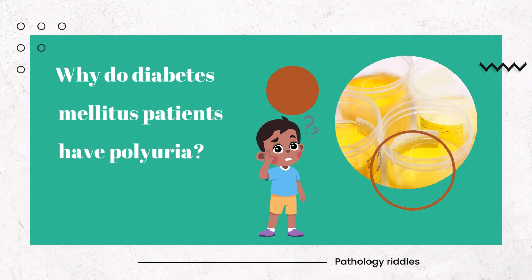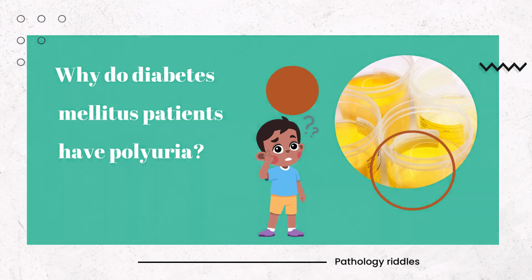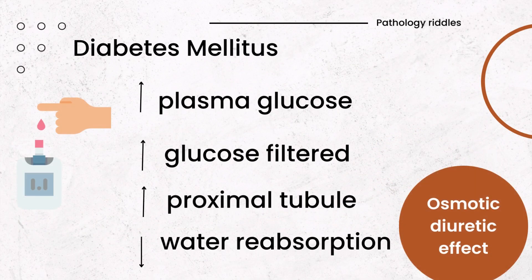Why do diabetes mellitus patients have polyuria? In diabetes mellitus, there is an increase in plasma glucose. The kidney has a renal threshold, beyond which it cannot reabsorb the glucose back. The excessive glucose which is filtered remains in the proximal tubule, which increases the osmotic pressure. Hence, water is retained and less water is reabsorbed by the kidney, causing polyuria.